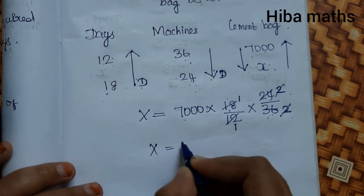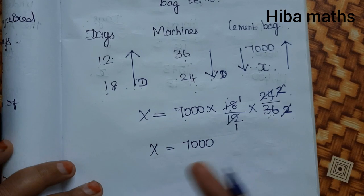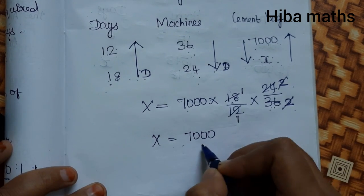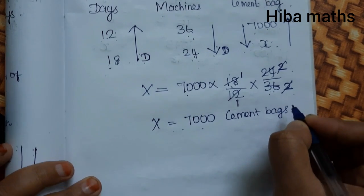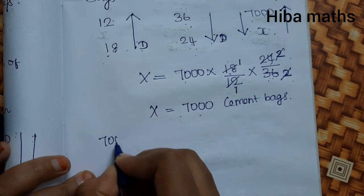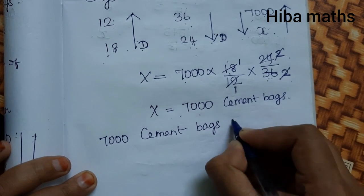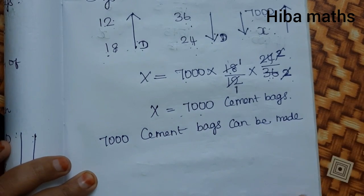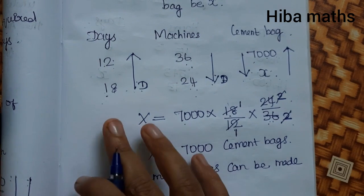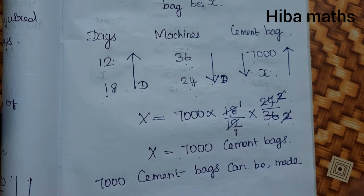So x is equal to 7000. There are no changes, so x equals 7000 cement bags. The statement will be: 7000 cement bags can be made. This question tests understanding of direct proportion and indirect proportion. This is very easy, so do practice that. Thank you so much for watching.